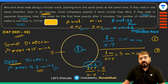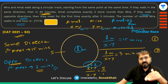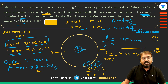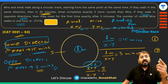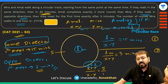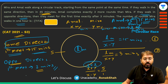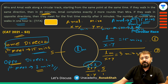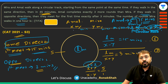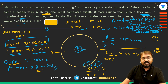Since the ratio of speeds is 3:2 and in the same direction they meet after 15 minutes — at which point Amal has run one more round than Mira — we confirm: in 15 minutes Amal runs 3 rounds and Mira runs 2 rounds. Therefore in 60 minutes Mira completes 8 rounds. That is our answer.